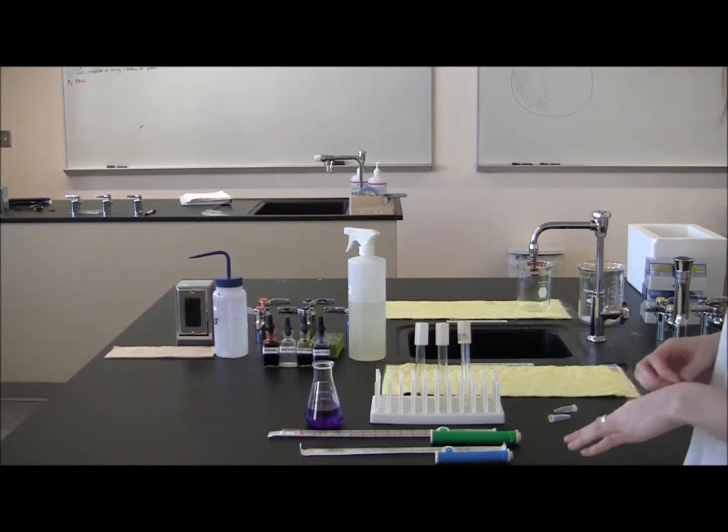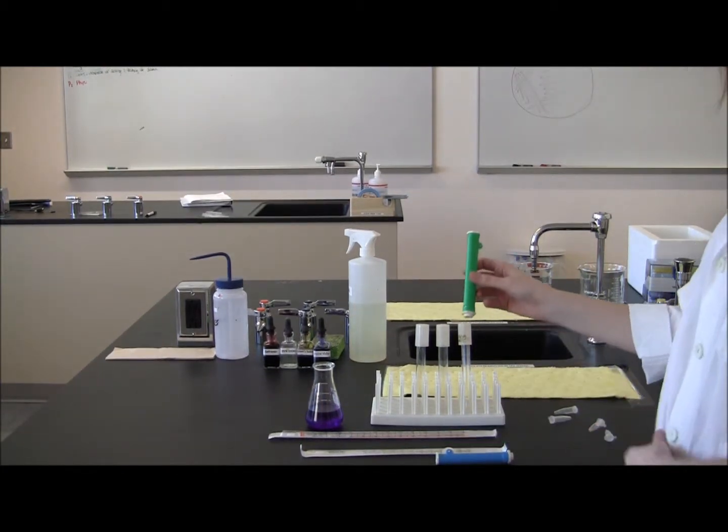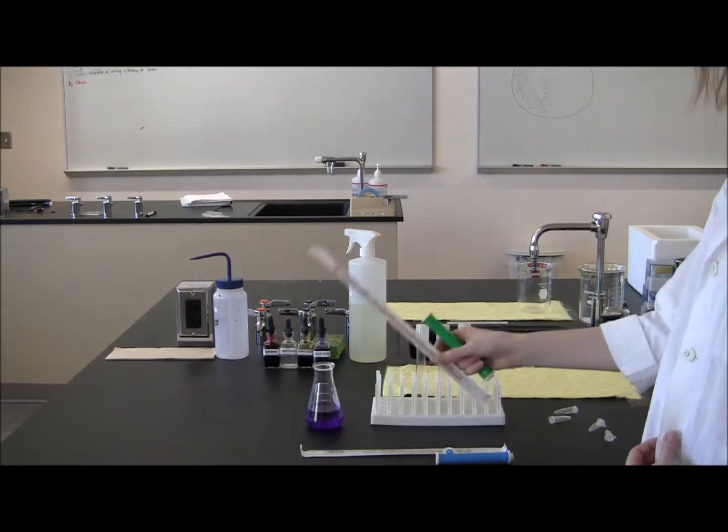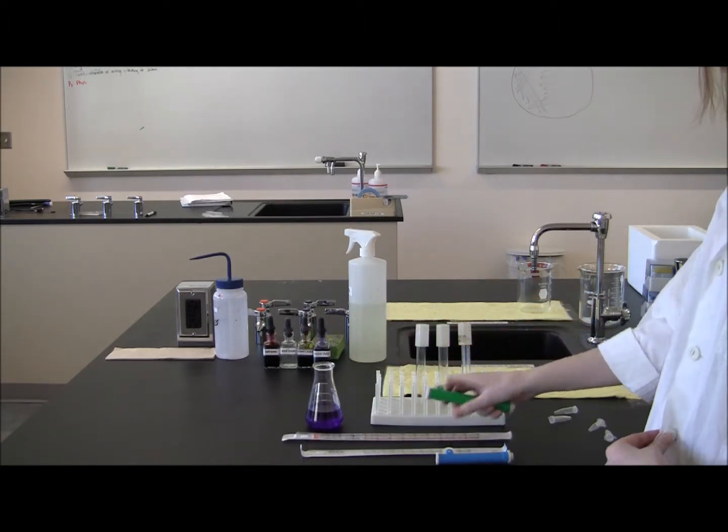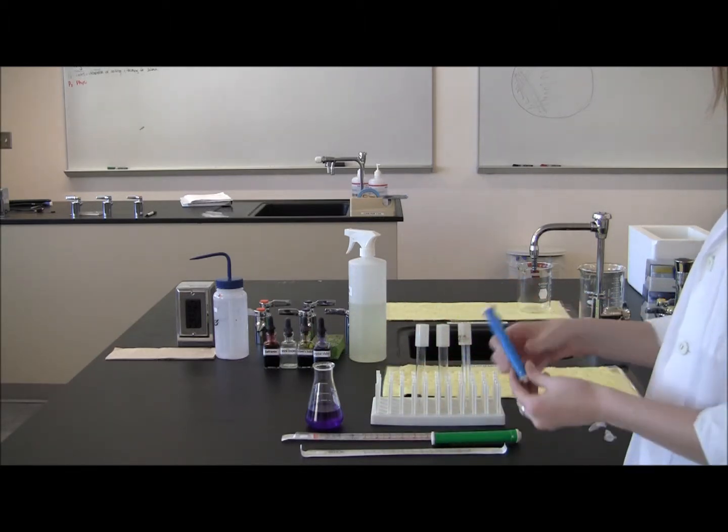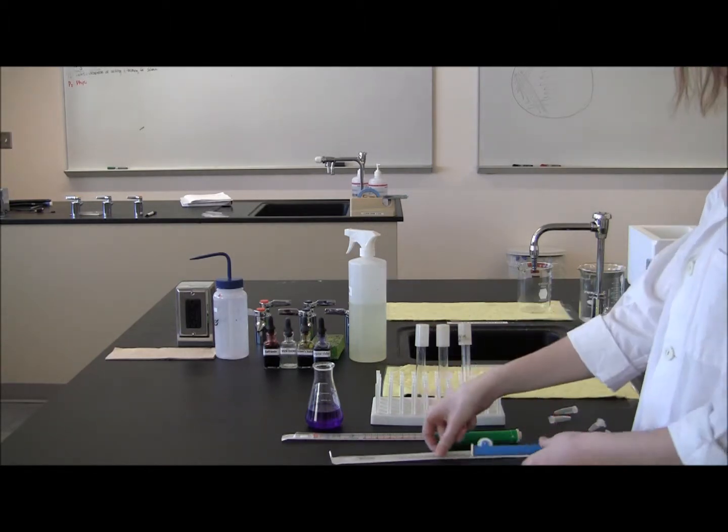So now we're going to talk about pipetting. The green pipet is used for pipetters that are 5 mils or above, and the small blue one is used for a 1 mil pipet when you're pipetting smaller volumes.